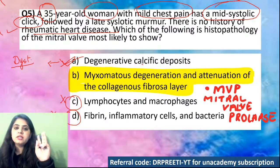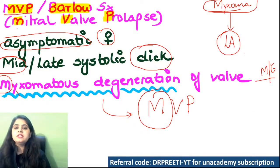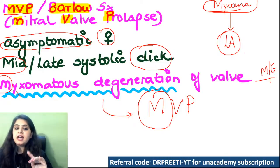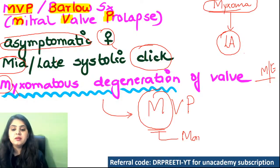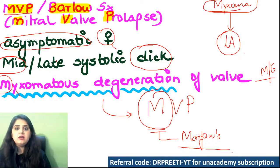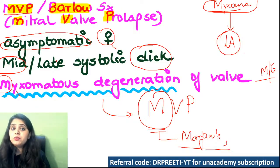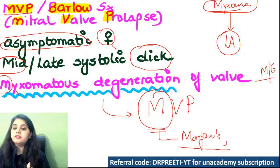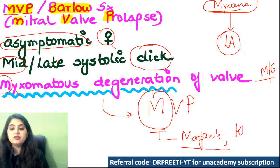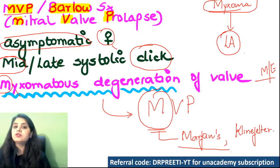Mitral valve prolapse is associated with syndromes — a very tall patient with extremely long spider fingers has mitral valve prolapse: Marfan syndrome. One more: a tall male patient with hypogonadism and small testicular size — that cardiac condition is also mitral valve prolapse: Klinefelter syndrome. So mitral valve prolapse is seen associated with Klinefelter and Marfan syndrome.